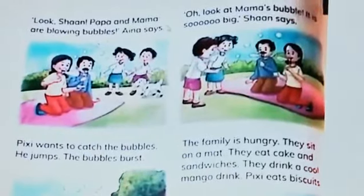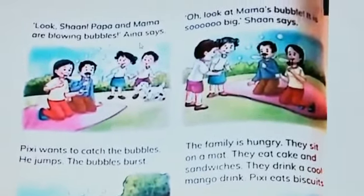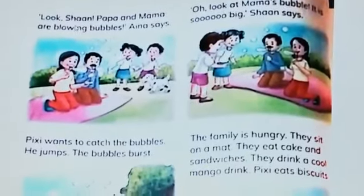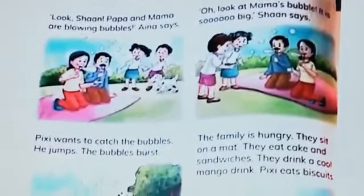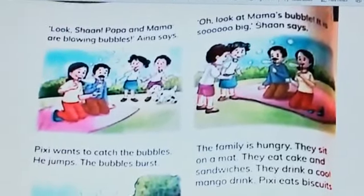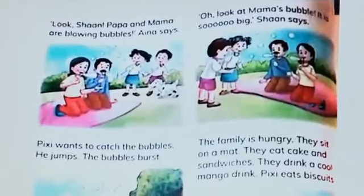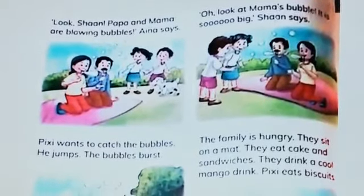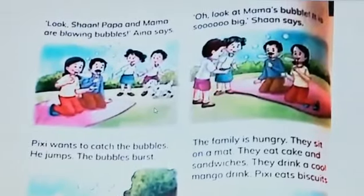Look, Shan — Papa and Mama are blowing bubbles, Ina says. Ina kehtti hai: Shan dekho, Mama aur Papa bubbles blow kar rahe hain, yaani bubbles phulaa rahe hain. Oh, look at Mama's bubble — it is so big, Shan says. Shan kehtta hai: Mama ki bubbles dekho, voh kitni badi hain.